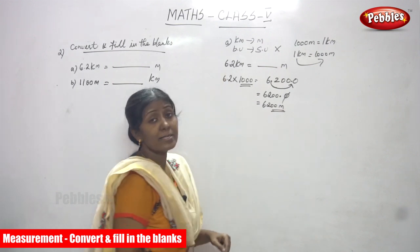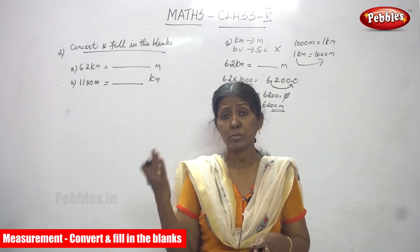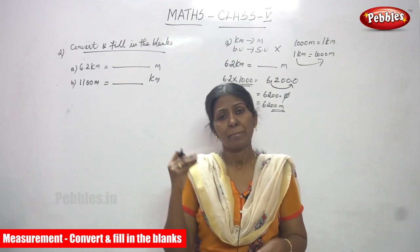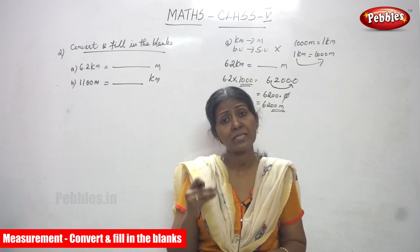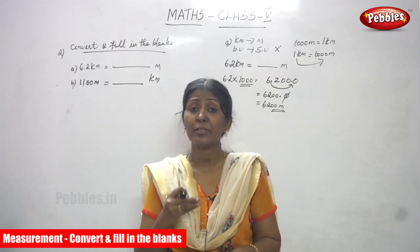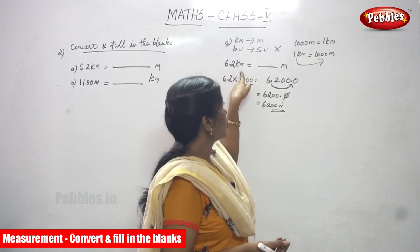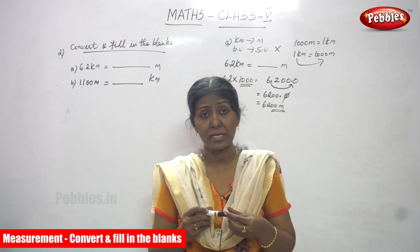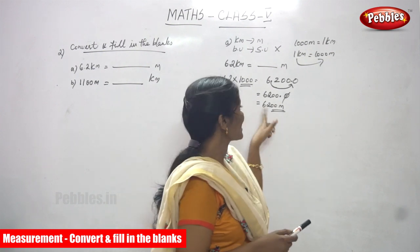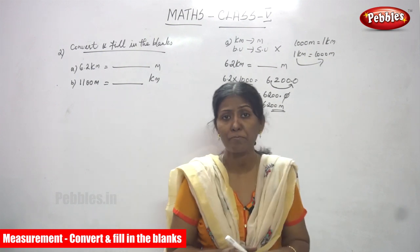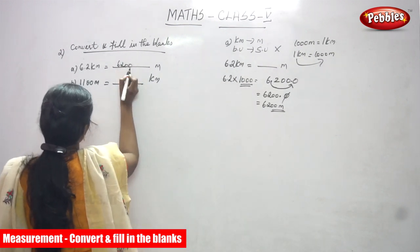To repeat: kilometer to meter — bigger unit to smaller unit. If you convert a bigger unit into a smaller unit, you have to multiply, according to the formula: 1000 meters equals 1 kilometer. So 6.2 kilometers multiplied by 1000 gives you 6200 meters. This is the right answer for this question.